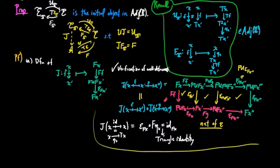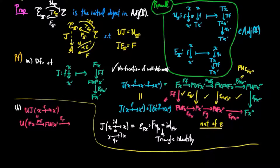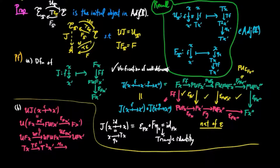Next, we show that J is a morphism in the category of T-inducing adjoint situations. We have UJ applied to F equal to UFF followed by Uε FX', which equals TF followed by the multiplication of the monad. But this is just the forgetful functor for the Kleisli category applied to F.